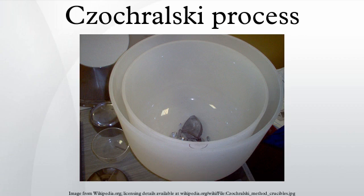A precisely oriented rod-mounted seed crystal is dipped into the molten silicon. The seed crystal's rod is slowly pulled upwards and rotated simultaneously. By precisely controlling the temperature gradients, rate of pulling, and speed of rotation, it is possible to extract a large, single crystal, cylindrical ingot from the melt.